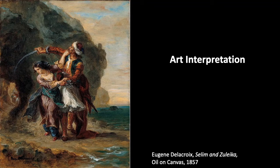Now that you've had time to analyze the painting on your own and answered some questions to help you go deeper in interpreting the meaning, I'm going to give you the artist's name and the title. We have Eugène Delacroix as the artist, and the painting is titled Salim and Zuleka.